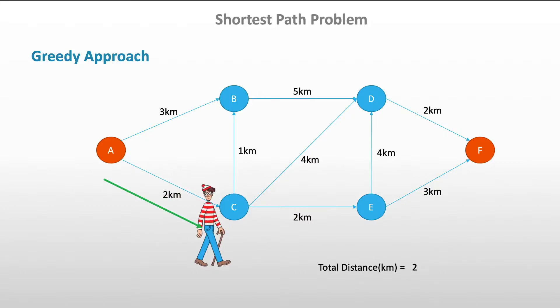From point C, he has three different options. Either he goes to point B, to point D, or to point E. And he looks at the distances, and the shortest one is one kilometer. So, he goes to point B.